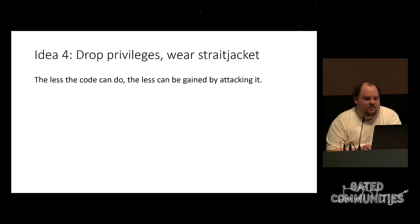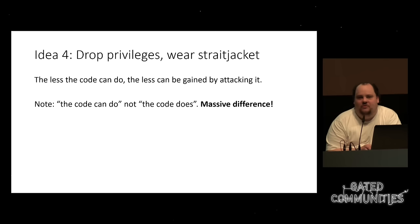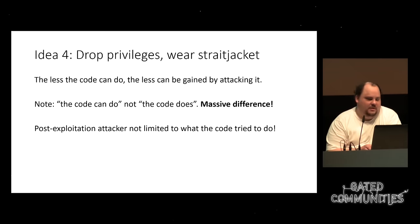The less the code can do, the less the attacker can gain by attacking it. However, there's a massive difference between what the code can do and what the code actually does — I'm talking about what it can do. If someone gets code execution in your process and that process can write somewhere, that's a problem. This is about what the code could do with the privilege level it's running at in the operating system. The post-exploitation attacker is not limited by what your code was trying to do — this is very important to understand.